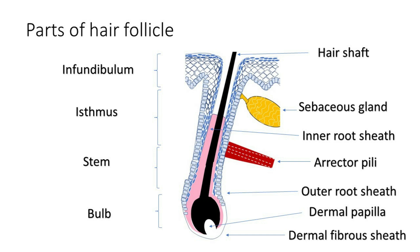The hair follicle can be broadly divided into four parts. The first is the infundibulum, which extends from the epidermis to the opening of the sebaceous gland. The second is the isthmus, which extends from the opening of the sebaceous gland to the insertion of the erector pili muscle. The third is the stem, which extends from the erector pili muscle to the Adamson's fringe just above the bulb. The fourth is the bulb, which is the bottom part of the hair follicle.